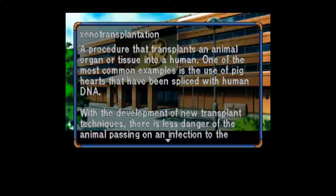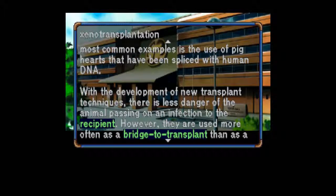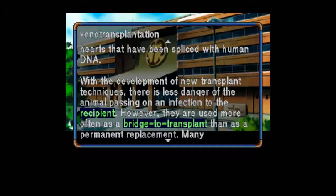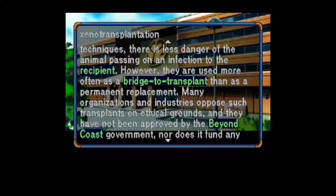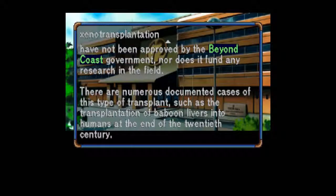Xenotransplantation: A procedure that transplants an animal organ or tissue into a human. One of the most common examples is the use of pig hearts that have been spliced with human DNA. With the development of new transplant techniques, there is less danger of the animal passing on an infection to the recipient. However, they are used more often as a bridge to transplant than as a permanent replacement. Many organizations and industries oppose such transplants on ethical grounds, and they have not been approved by the Beyond Coast Development, nor does it fund any research in the field. There are numerous documented cases, such as the transplantation of baboon livers into humans at the end of the 20th century.